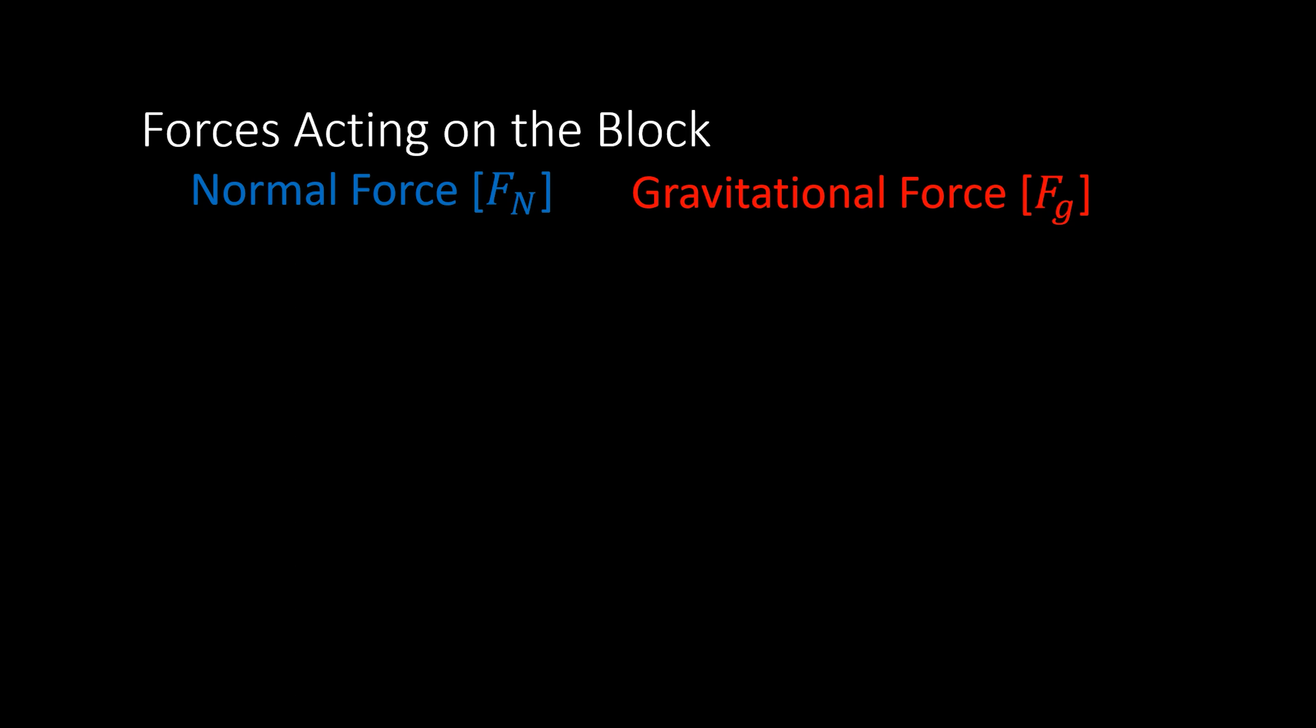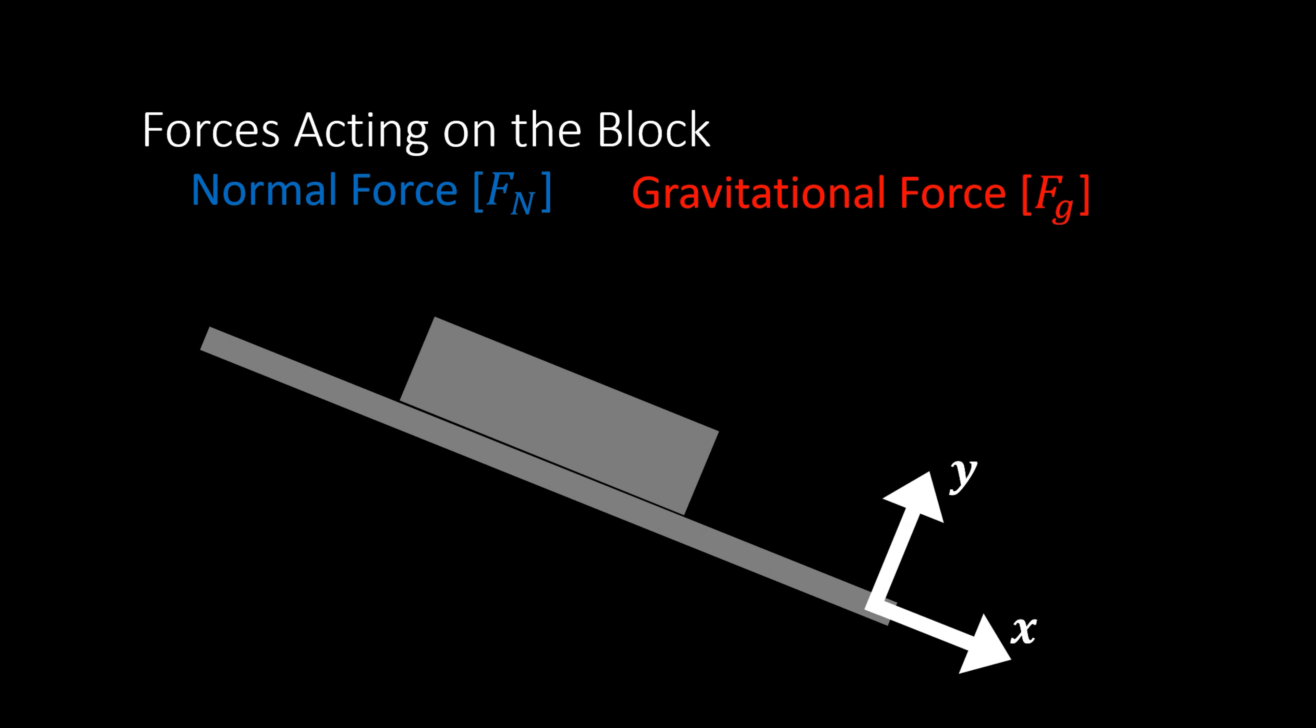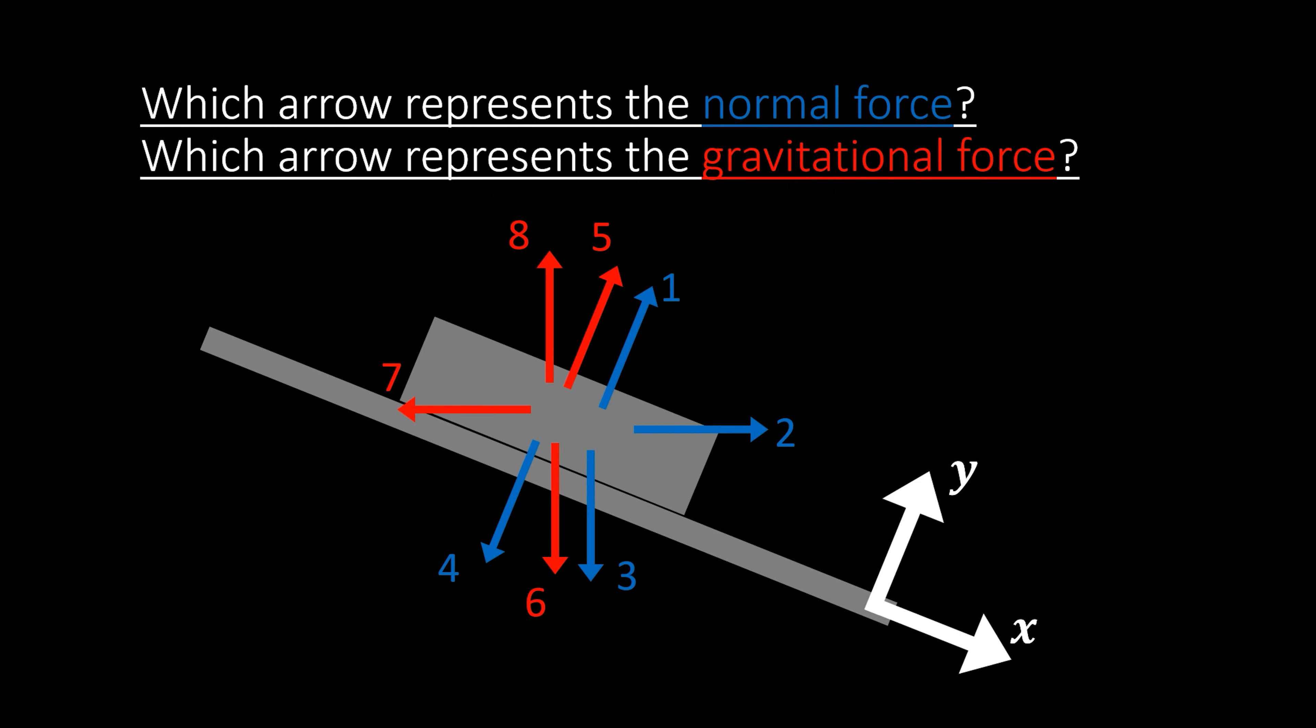There's two main forces acting on the block. We have the normal force and we have the gravitational force. In order to understand how these forces affect the block, let us draw a free body diagram of the block while it is at the top of the ramp. Here we have the block at the top of the ramp. Where do you think we're going to put the normal force and the gravitational force?